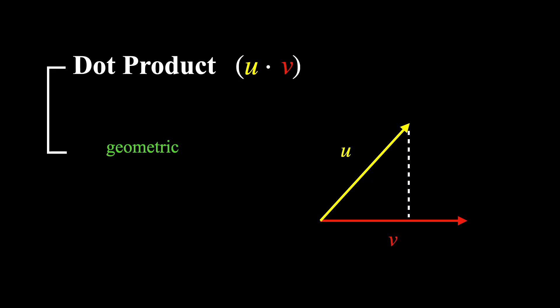Then, project u onto v. You will get a new vector, let's call it u'. Multiplying the length of this projection with the length of v gives you the dot product u dot v.